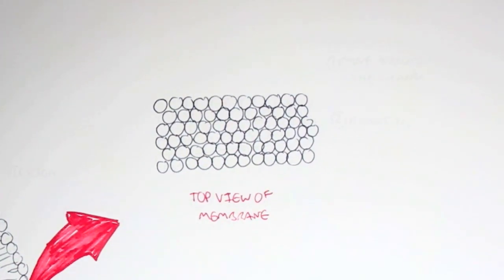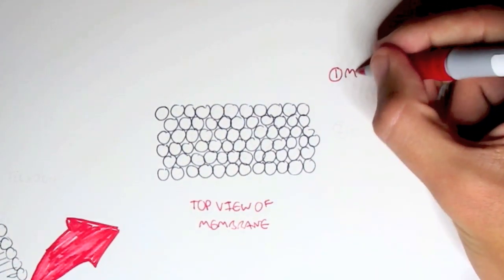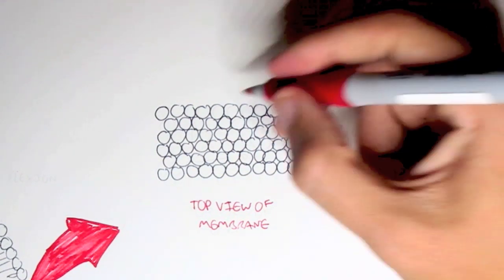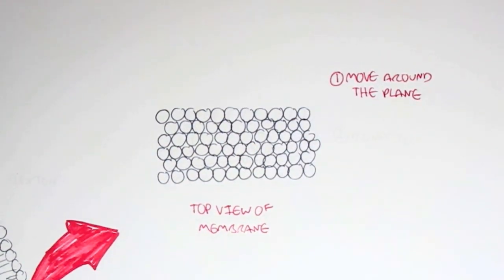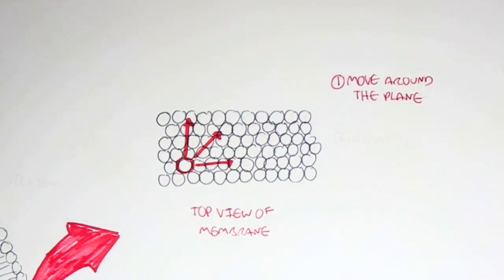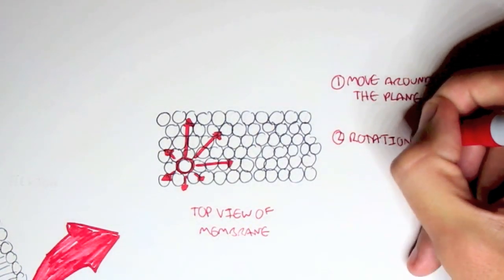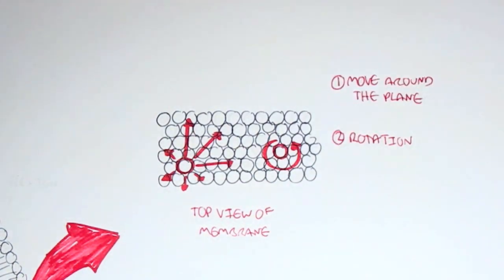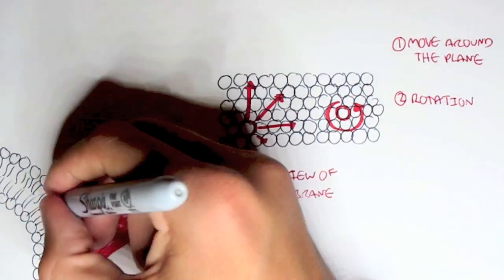Now there are two things I want to point out here. One is that the lipid can move around on the same plane, and this is sort of like lateral diffusion from the uncatalyzed version. But essentially it can move anywhere within the same layer, around the same plane. And two, the lipid itself can rotate, obviously, because it is in constant motion.